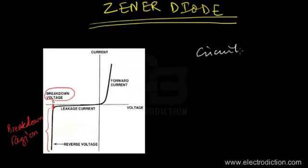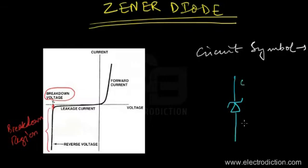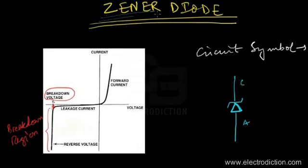Let me show you the circuit symbol of the zener diode. It looks similar to a regular diode but the cathode side has a Z-type structure — since its name begins with 'zener.' Here we have the cathode of the zener diode, and this terminal is the anode. This modification is done to distinguish it as a zener diode.